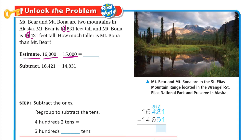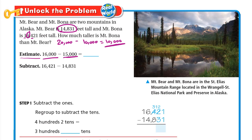If we had rounded to the greatest place value digit instead: fourteen thousand eight hundred thirty-one rounds to ten thousand (four is weak), and sixteen thousand rounds to twenty thousand (six is strong). The difference between twenty thousand and ten thousand is ten thousand — that is too high an estimate, because the actual difference is only about one or two thousands. That's why we round to the digit before the last digit.